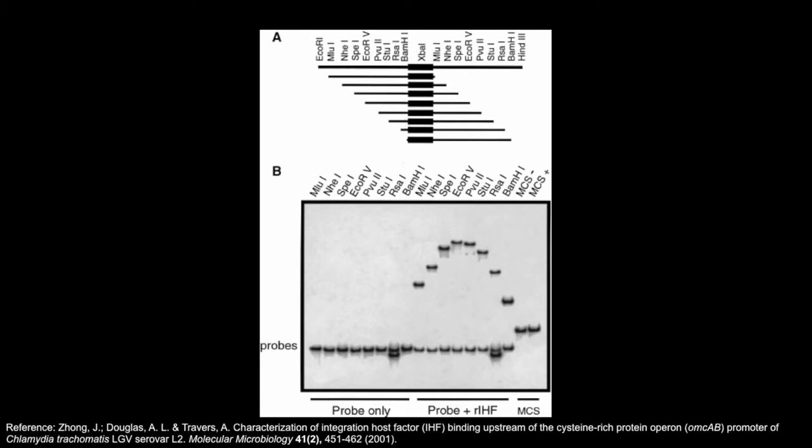In separate reaction tubes, the researchers can add one restriction enzyme to the recombinant DNA, isolate their probes, which is what they refer to the DNA fragments as in this experiment, add IHF, and then run the DNA fragments on a gel to examine their electrophoretic mobilities. In this experiment, the researchers used radiolabeled DNA and visualized bands on the gel using autoradiography. In the first lanes, you can see that the researchers incubated with the probes alone. As you can see, because the restriction sites are evenly spaced, each restriction enzyme gives a band of uniform size.